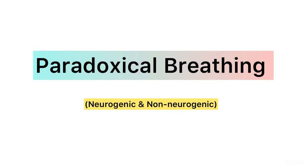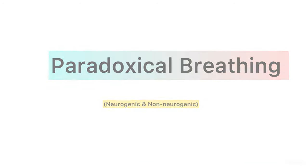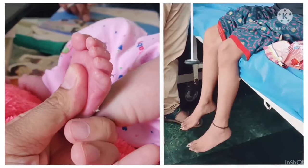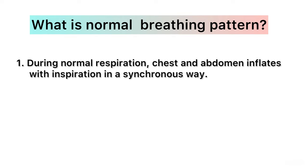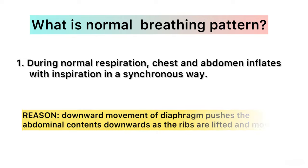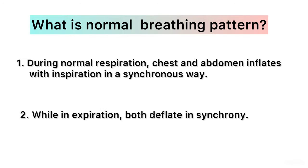Today we will talk about Neurogenic and Non-Neurogenic Paradoxical Breathing. During normal respiration, chest and abdomen inflate with inspiration in a synchronous way because the downward movement of the diaphragm pushes the abdominal content down as the ribs are lifted and moved out. While in expiration, both deflate in synchrony.